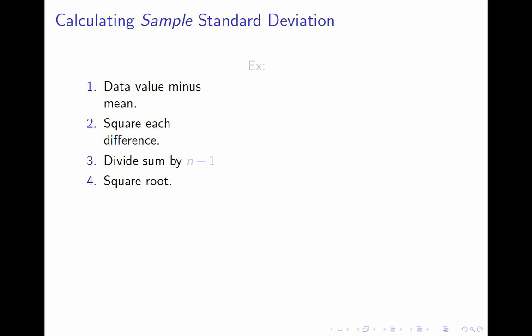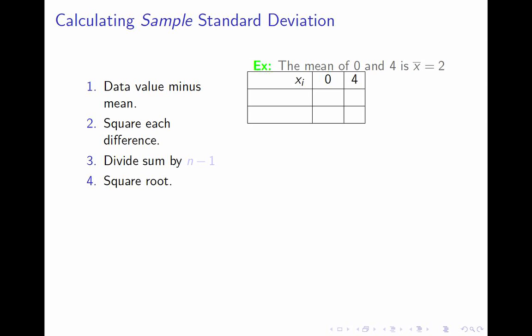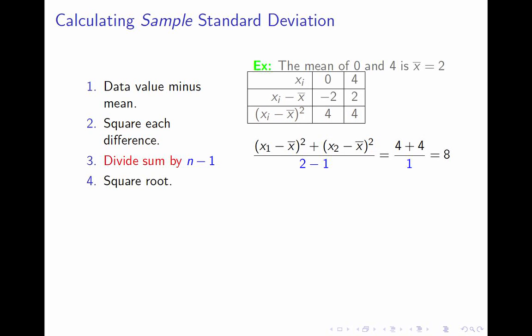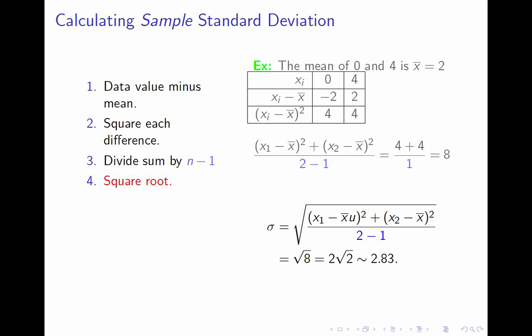Let's calculate the sample standard deviation in the same example: two data points, zero and four. We start with zero and four. As before, we subtract the mean: 0 minus 2 is negative 2, 4 minus 2 is 2. As before, we square those: negative 2 squared is 4, 2 squared is 4. But now, instead of averaging them, we add them to get 8 and divide not by n — which is 2 — but by n minus 1, which is 1. Four plus four divided by one is 8. Then finally we take the square root and get the square root of 8, or two root two, which is about 2.83. The sample standard deviation is bigger than the population standard deviation. In this case with only two data points it's noticeably bigger; usually it's a trivially small difference.